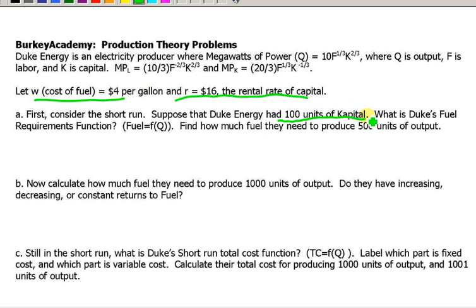What do we do? Well, what we do is we look at this production function here and we simplify it. We say, well, the output now is 10 times the amount of fuel to the one-third times the amount of capital, which is fixed at 100 in the short run, raised to the two-thirds power. So let's take a minute and just simplify this function and see what you get.